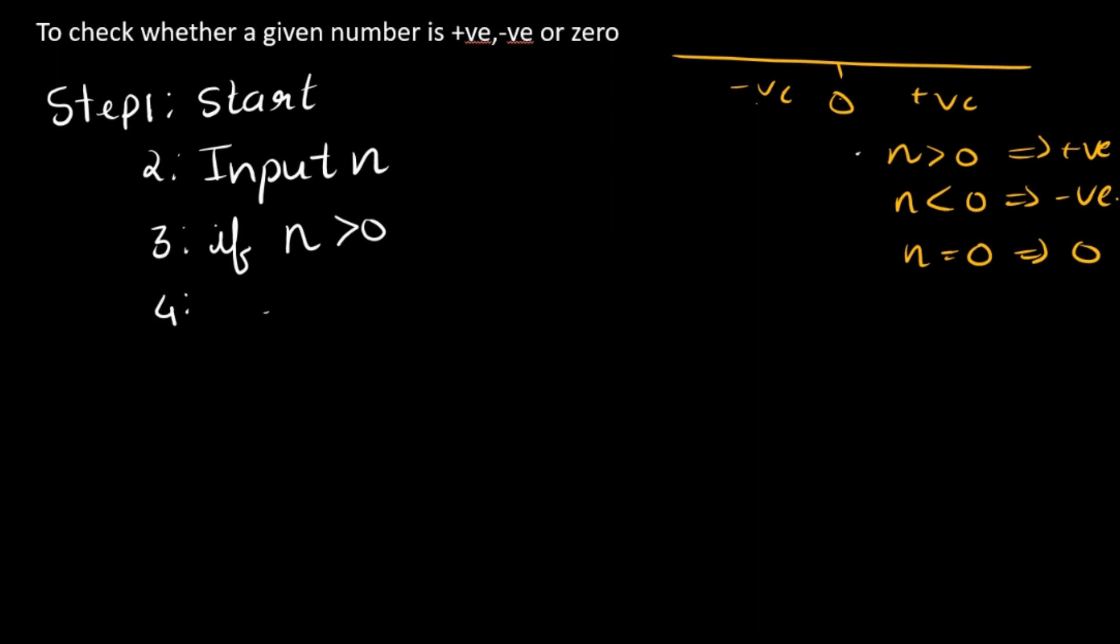Okay, so fourth step is print positive. Fifth step is elif. Now until now we saw the case else, right? If this isn't the case, now that is a case but here we have three cases. So the second case, or whatever it is, if it is in the last case then we write it as elif. Okay, so elif n less than zero. Six step: print